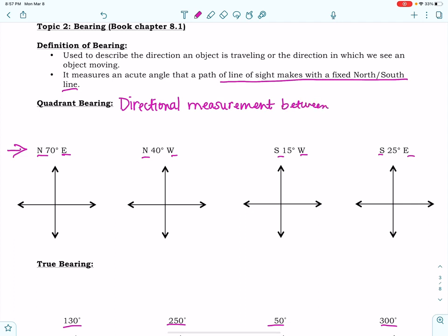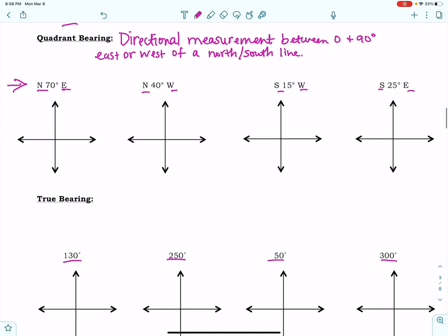Quadrant bearings are between 0 and 90 degrees, east or west of a North-South line. When we are working on quadrant bearings, the very first thing we're going to do is label North, East, West, and South. That is where we're going to start. I'm going to do that for each of these because that's going to help us draw in our bearing angle.